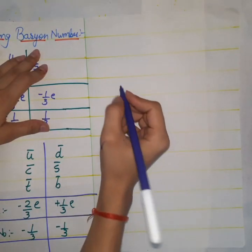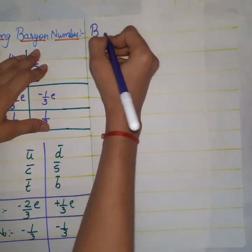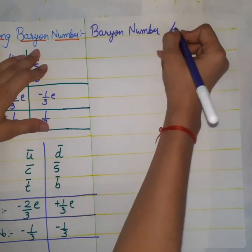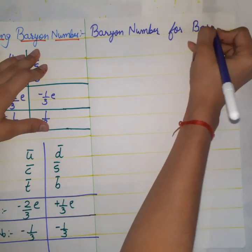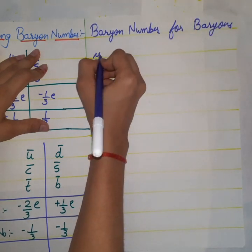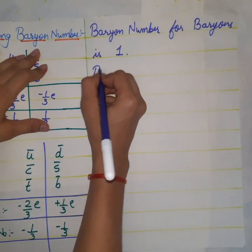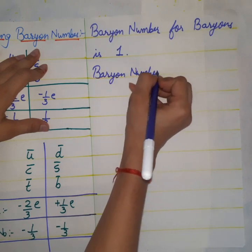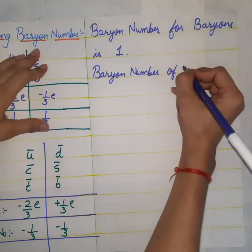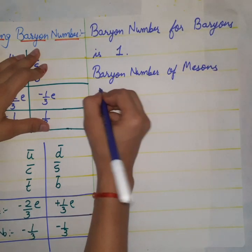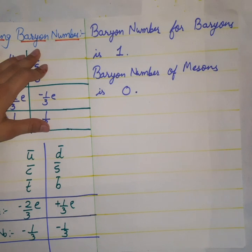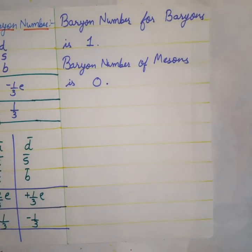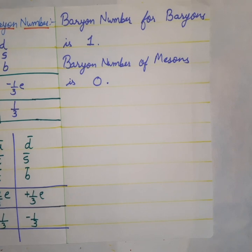The baryon number for baryons is 1, whereas the baryon number for mesons is 0. We will now calculate the baryon number by considering different combinations of quarks.